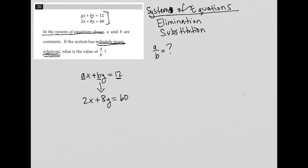First of all, the easiest way to do that is to multiply by 5. Because I know for sure that if I multiply by 5, I'm going to make that 12 into a 60. So let's see what happens when I do that. That becomes 5AX plus 5BY equals 60. So now I have these two equations, 2X plus 8Y equals 60.